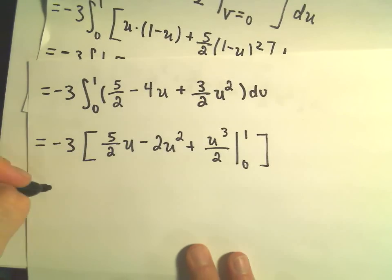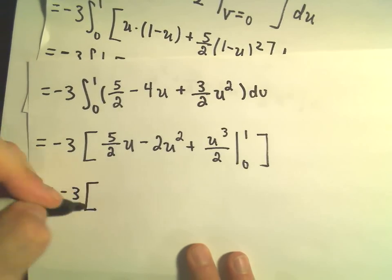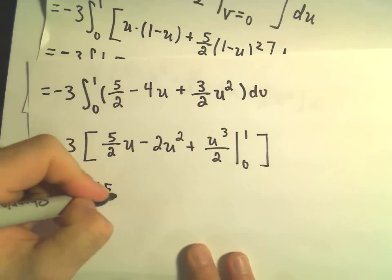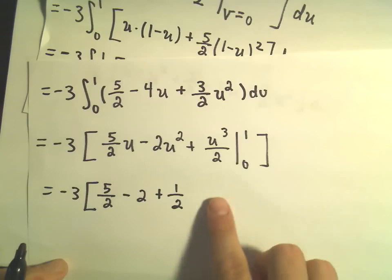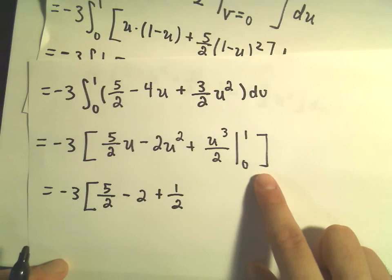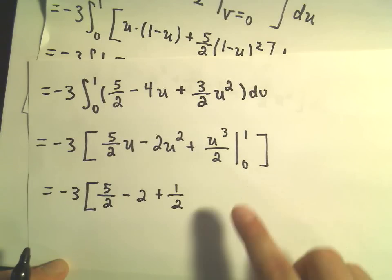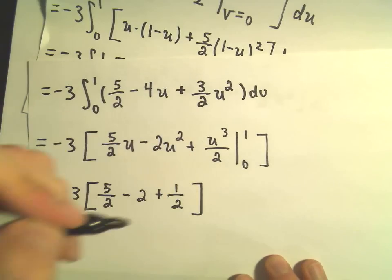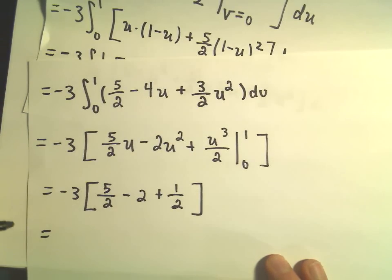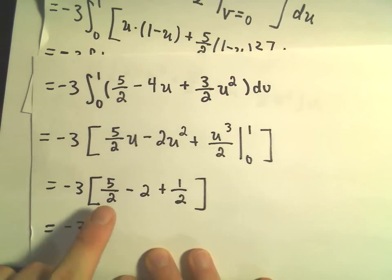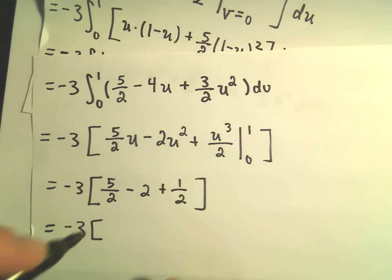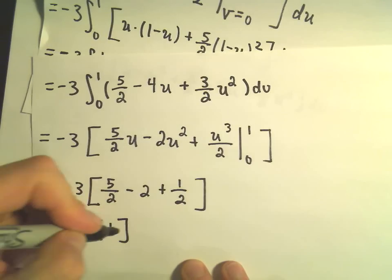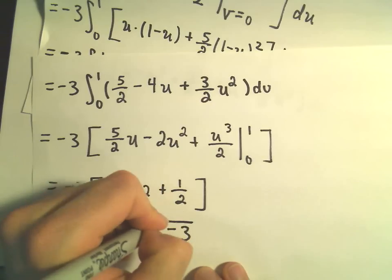So we're almost there. We've got negative 3. If we plug in u equals 1, we'll have 5 halves minus 2 plus 1 half. And again, our lower limit of integration, I think you can convince yourself that this is simply going to give you a 0. So 5 halves plus 1 half, that's 6 halves, or 3. 3 minus 2 is going to be positive 1. Negative 3 times 1 is negative 3.